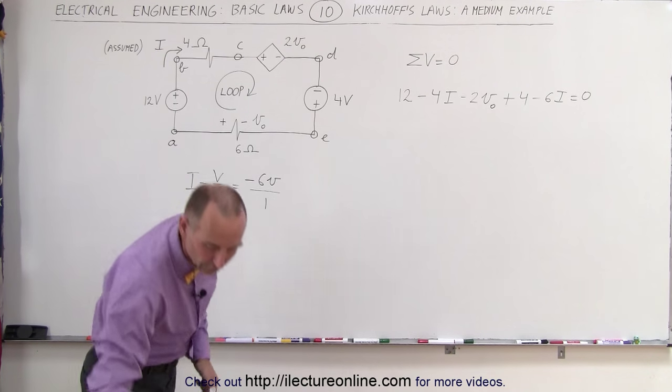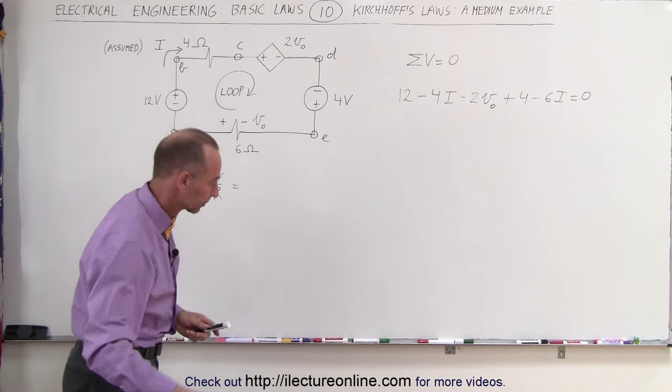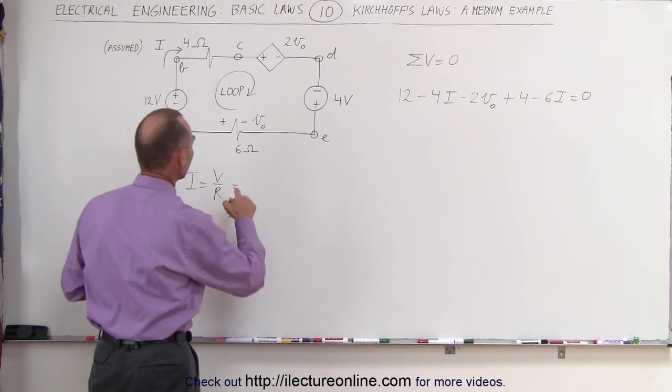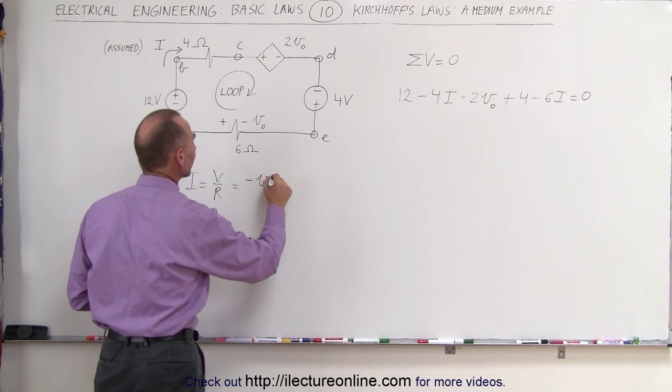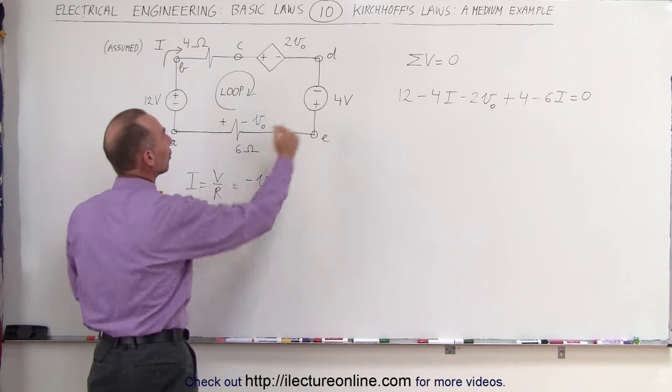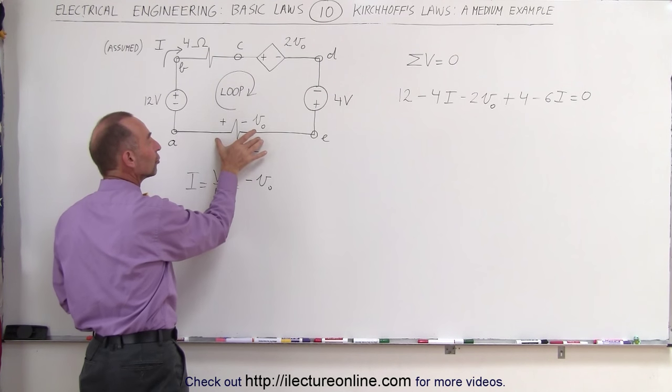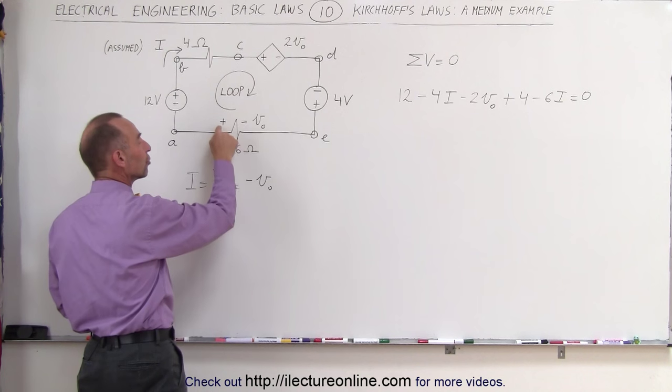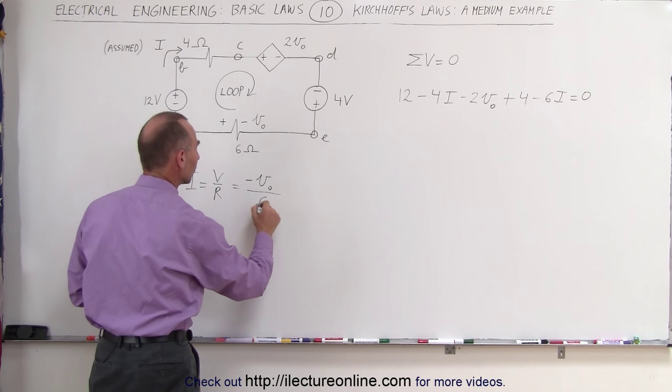Hold it, hold it, hold it. Back up. So this is equal to the voltage across that. It is going to be a minus V sub nought. Why minus? Because we're assuming the current to be in this direction, which causes, which should make this a voltage drop, but instead it's a voltage rise, so we have to put a minus in there, divided by the resistance, which is 6 ohms.